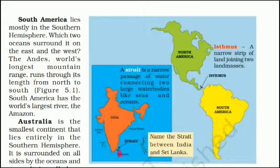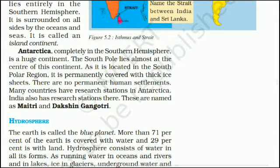South America has the world's largest river, the Amazon. Australia is the smallest continent that lies entirely in the southern hemisphere. It is surrounded on all sides by oceans and seas and is called an island continent. Antarctica, located completely in the southern hemisphere, is a huge continent. The South Pole lies almost at its center. It is permanently covered with thick ice sheets and has no permanent human settlements. Many countries, including India, have research stations there, named Maitri and Dakshin Gangotri.